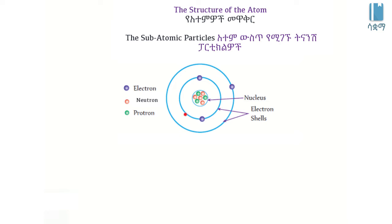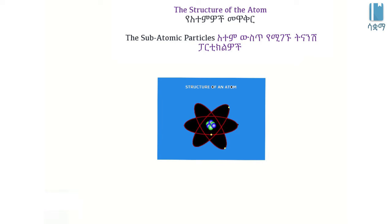The nucleus occupies a small volume of the atom. The heaviest part of the atom is proton and neutron. The atomic nucleus — proton, neutron — is the central part of the atom.